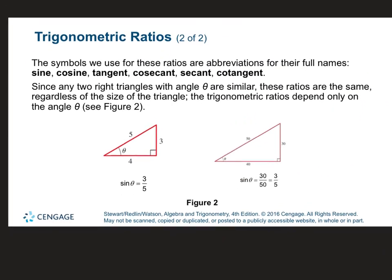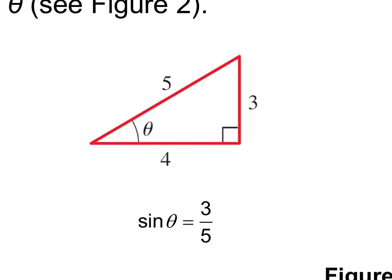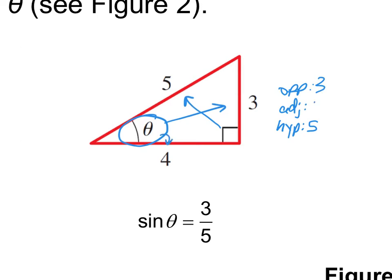If a question asks you to find all the tangent, cotangent, and so on, the easiest thing to do is label the sides. So if this is theta — the angle they're telling me to look at — 5 is your hypotenuse. Write opposite, adjacent, and hypotenuse. My hypotenuse is 5. Is 3 next to or across from the angle? It's across, so 3 is our opposite, and adjacent is 4. That way you don't even have to look at the triangle again.